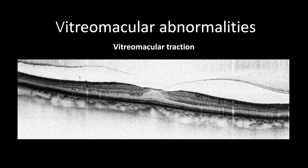OCT is a handy tool to measure vitreomacular attachment. Cases with attachment less than 500 microns have a better chance of spontaneously releasing the vitreomacular traction. In contrast, broad attachment of more than 1,500 microns has less chance of spontaneous release. Therefore, OCT is meant to not only diagnose but also aid in decision-making in cases of vitreomacular tractions.